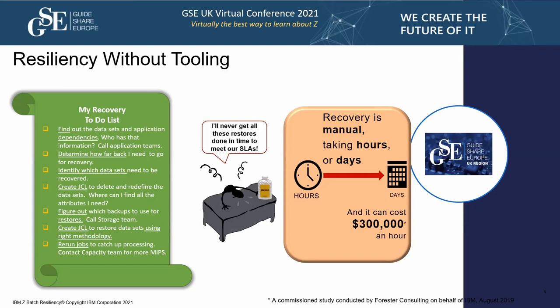We've heard of cases where customers went through the complete process only to find the wrong data was recovered, so they had to go through it again. In some cases, customers had to bring extra engines online to their Z machine because they had to run multiple batch cycles in a single day — their regular batch cycle plus one from the previous two days — which of course costs more money. Time is the enemy: the difference between an incident and a catastrophe is time.